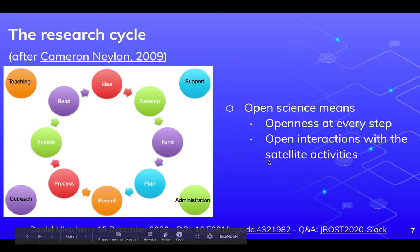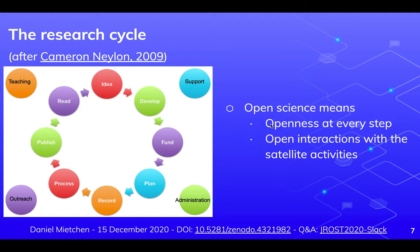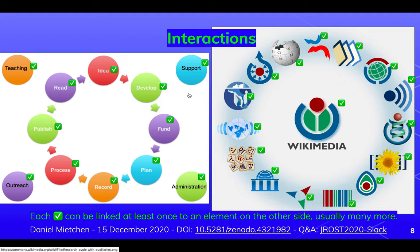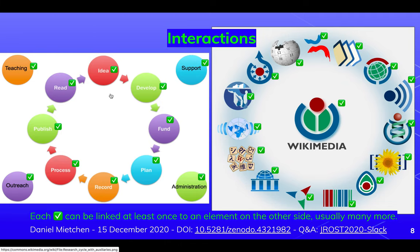In addition to what we've seen before, this means there is openness at every step, and there are open interactions with the satellite activities. Now let's put this together with the Wikimedia ecosystem. There are interactions between each step of the research cycle and the Wikimedia platforms. Those platforms have content about these elements — but I'm actually ignoring those trivial solutions here. So there are other interactions as well. Let's look at some of those examples.